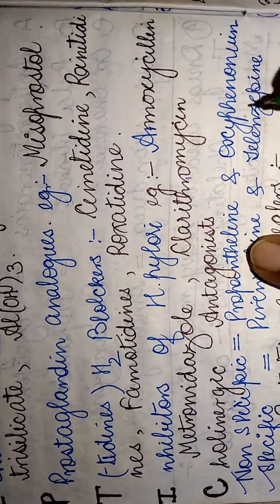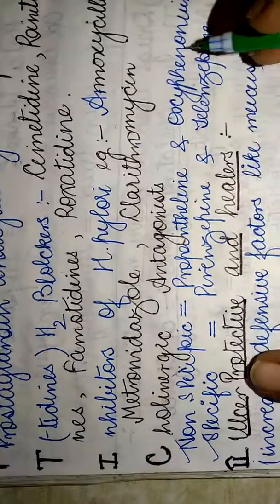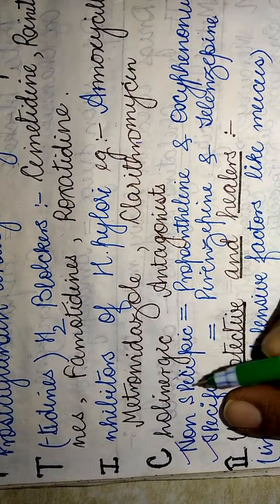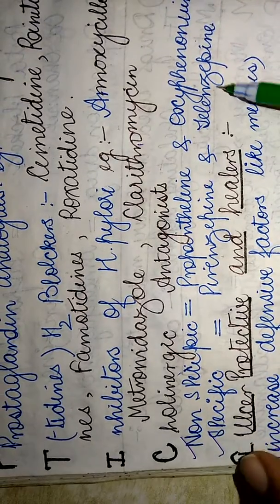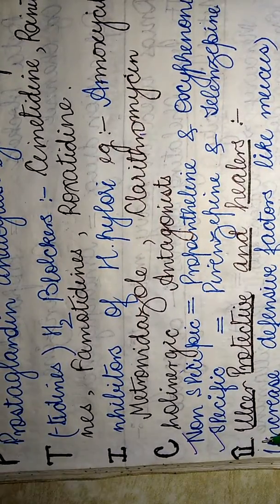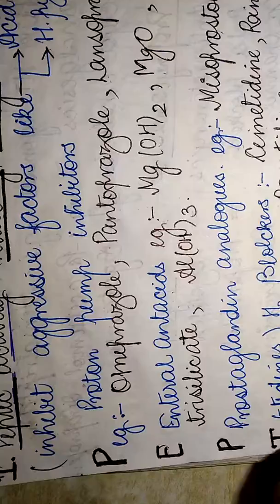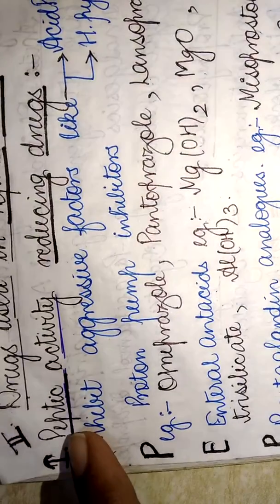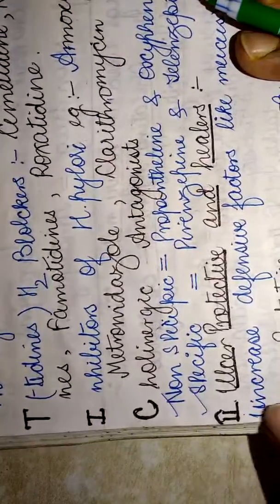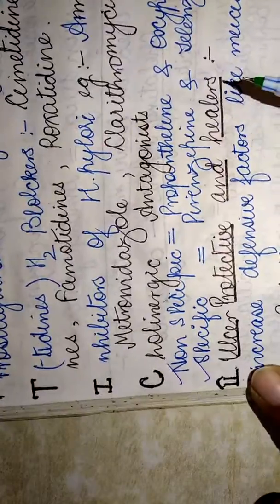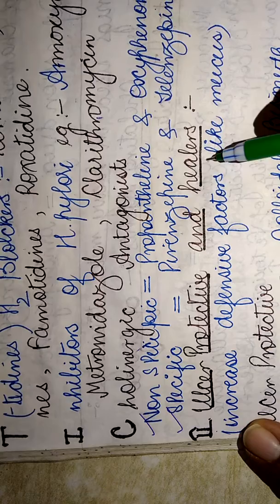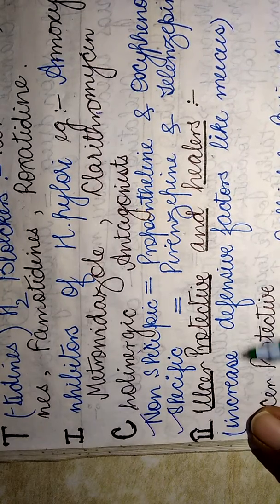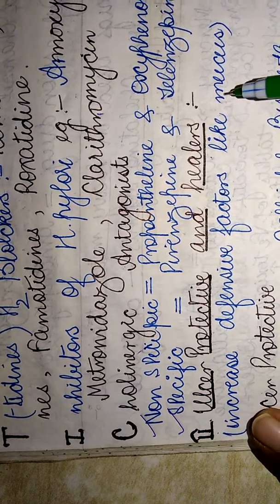Whereas the specific cholinergic antagonists include pirenzepine and telenzepine. The next category includes ulcer protective and healers. These ulcer protective and healer drugs increase the defensive factors like mucus.